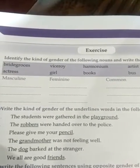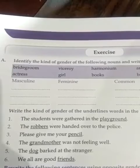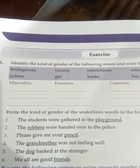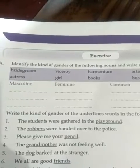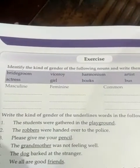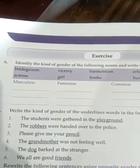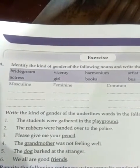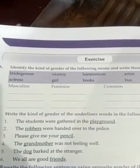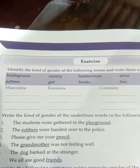Next: 'The robbers were handed over to the police' — you have to write the kind of gender. 'Please give me your pencil' — the word 'pencil' is underlined, you have to write what kind of gender pencil is. 'The grandmother was not feeling well' — 'grandmother' is underlined, write the kind of gender. 'The dog barked at the stranger' and 'We are all good friends' — write what kind of gender the underlined words are.